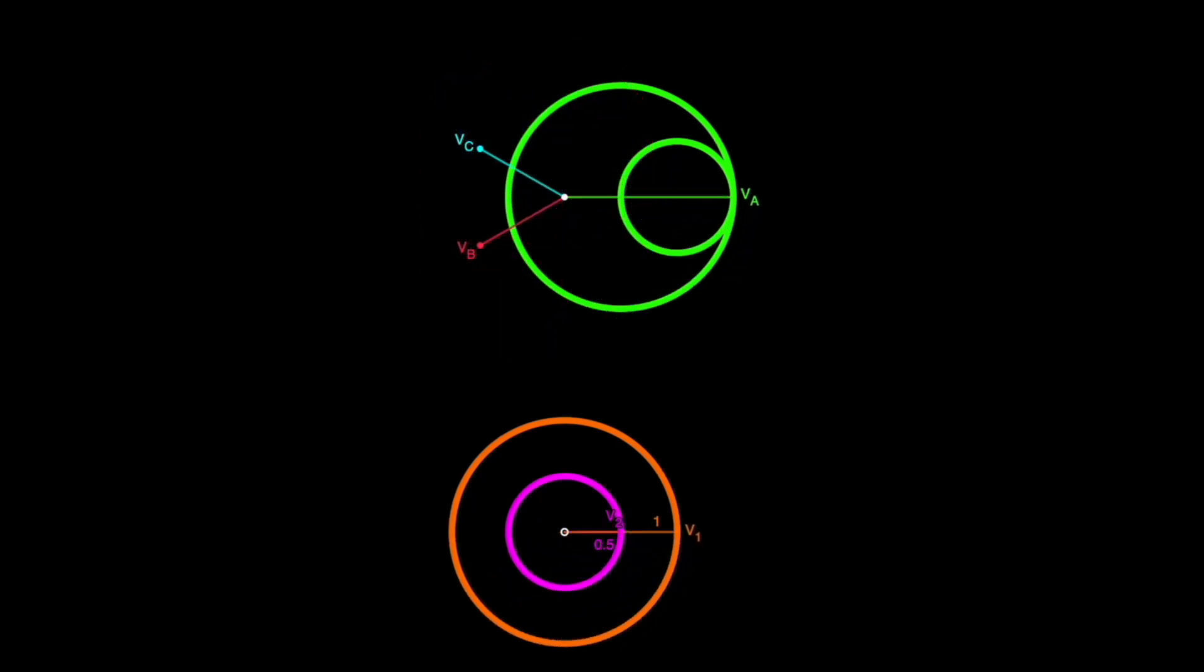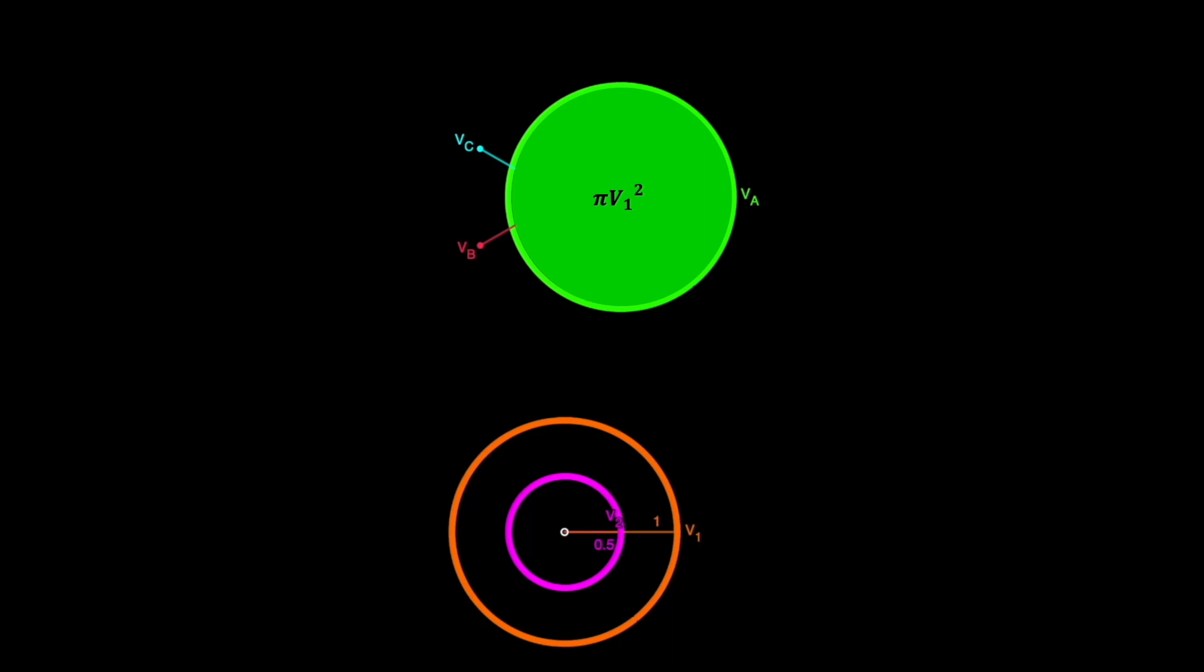I'll remove the B and C phase circles now just to make this image less busy. The negative sequence circle has an area of pi v2 squared, and likewise the positive sequence circle has an area of pi v1 squared, with the difference of the areas shown here. It may not seem important to show these areas now, but I'll be coming back to this soon.